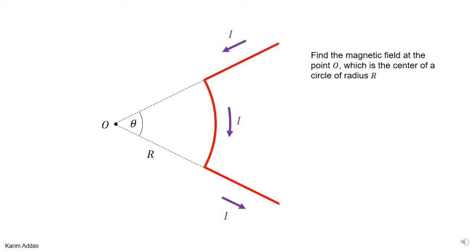We're going to do an example to calculate the magnetic field in a particular problem, where a relatively easy geometry makes it simple. The wire starts at infinity, goes along a radial line, then along an arc of a circle subtending angle theta, and then continues back to infinity along another radial line. The wire is shown in red and the direction of the current is indicated.